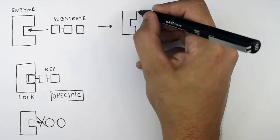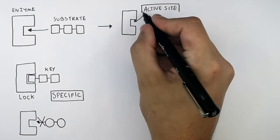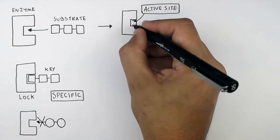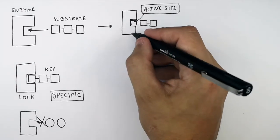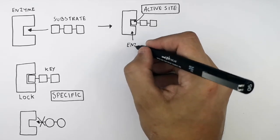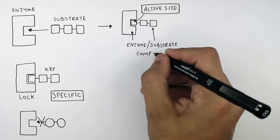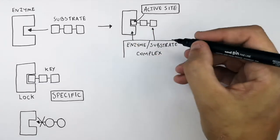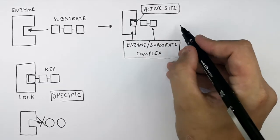This is the enzyme, and this here is the active site of the enzyme. The substrate binds the specific active site of the enzyme to form the enzyme-substrate complex, when the substrate has bound to its specific active site.